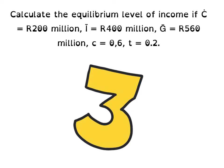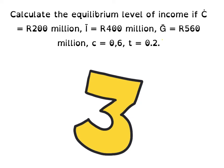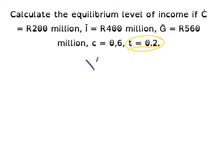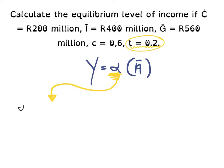For our third example, we are going to only change the value of t based on our second example. We need to calculate the equilibrium level of income if C-cap equals 200 million, I-cap equals 400 million, G-cap equals 560 million, marginal propensity to consume equals 0.6, and now the tax rate t is equal to 0.2. We will use the same formula: Y equals alpha times autonomous spending. Since autonomous spending did not change, the only variable that changed is our multiplier.